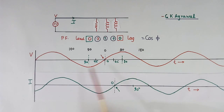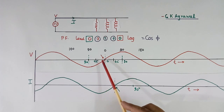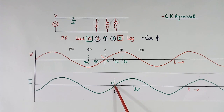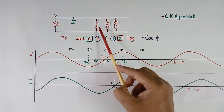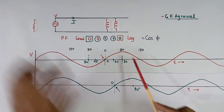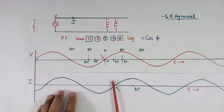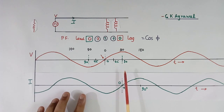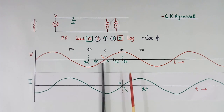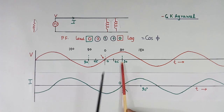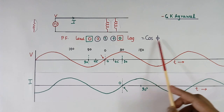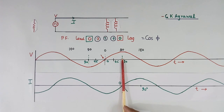Why lagging? Suppose we start from here — first the voltage zero crossing will come, then the current zero crossing will come. So the current crossing is lagging, or coming afterwards. When current is lagging, power factor will also be lagging. Now suppose we remove the resistor and only the inductor is there. In that case, we will shift further and it will come to 90 degrees. Now the angle between zero crossing of voltage and current is 90 degrees. Cos 90 equals 0, so power factor is 0.